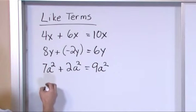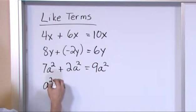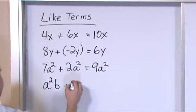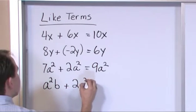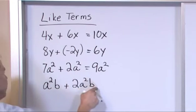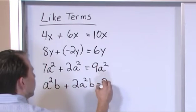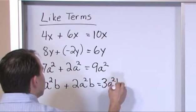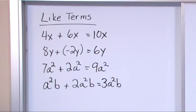And it gets even more complicated if you wanted to have like a squared times b plus 2 times a squared b. These are also like terms because I have a squared b and I have a squared b. So I can add 2 plus the 1 giving me 3 times a squared b.